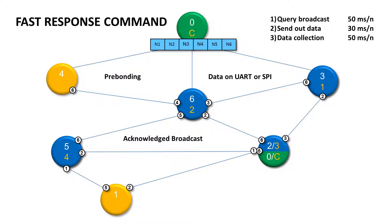The last predefined FRC reads one byte temperature from all nodes. With the custom DPA handler you can create your own fast response commands as well, so it's up to you what kind of acknowledge broadcast command you want to send or what kind of data you want to read.